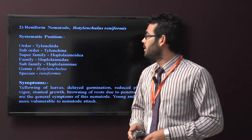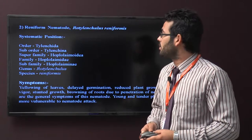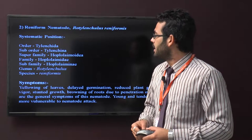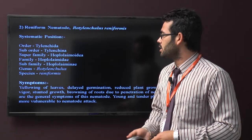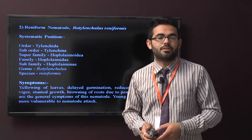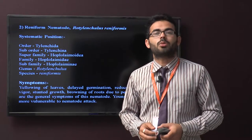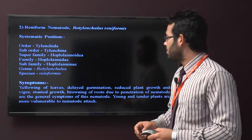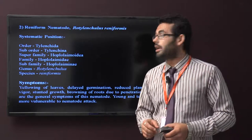Second is reniform nematode, scientific name Rotylenchulus reniformis. Its family is Hoplolaimidae. Symptoms include yellowing of leaves, delayed germination, reduced plant growth and vigor, stunted growth, and browning of roots.